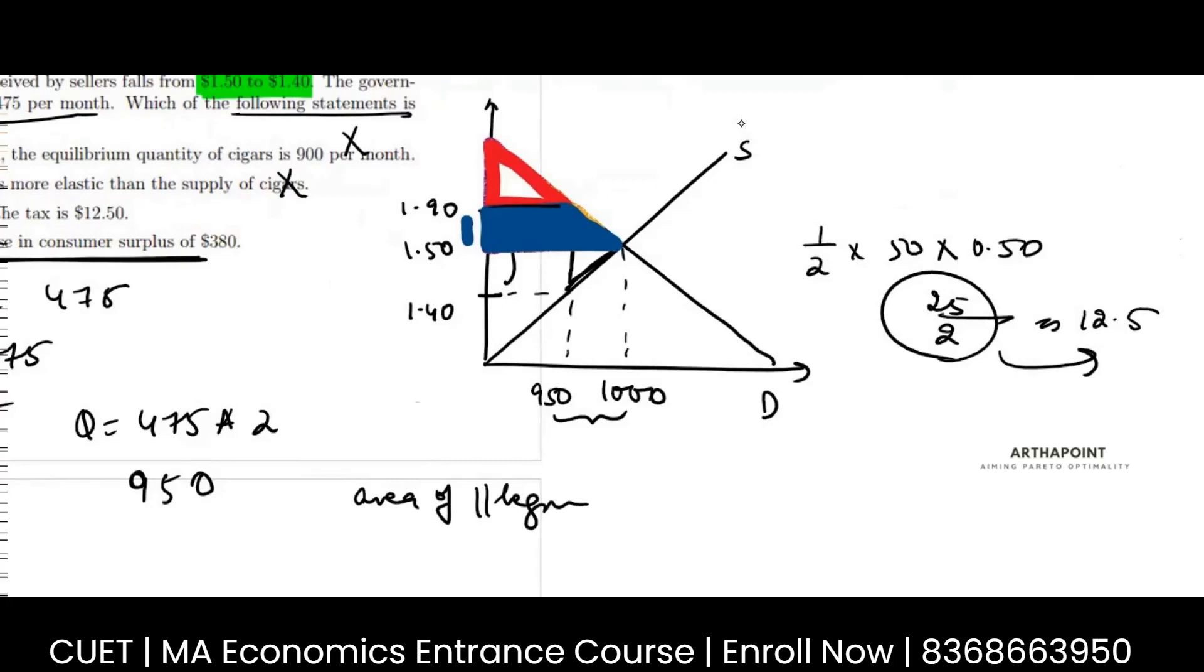Here, either you use area of a parallelogram - so I have two parallel sides and this is my perpendicular, so sum of parallel sides into perpendicular into half, that's the area of the parallelogram. Either you use that, or you use the area of triangle plus the area of rectangle. That's also what you can do.